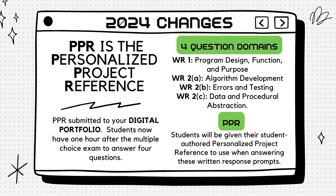So what exactly has changed? The biggest shift is the written response now happening the day of the exam. Students will have one hour after the multiple choice exam to answer four questions in the following categories: Program Design, Function and Purpose; Algorithmic Development; Errors in Testing; and Data and Procedural Abstraction. That's what's changing.